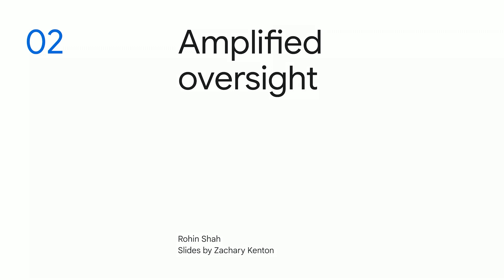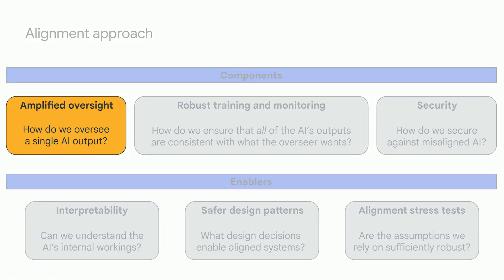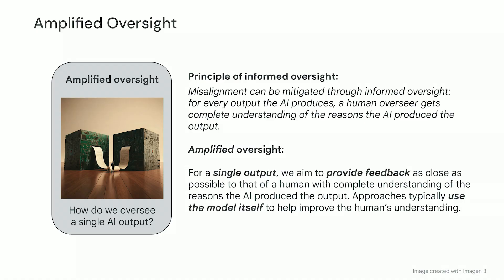As you may remember from the overview, Amplified Oversight works on the question of how do we oversee a single AI output. Let's recall the principle of informed oversight, which is that misalignment can be mitigated if, for every output the AI produces, a human overseer gets complete understanding of the reasons that the AI produced that output. Amplified Oversight is one of the pieces for achieving informed oversight.